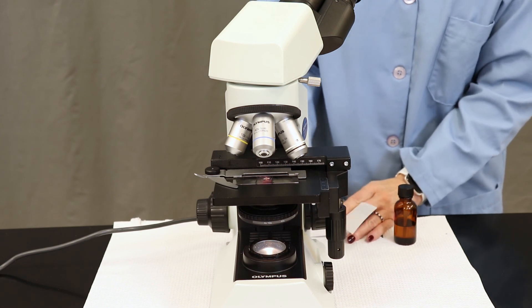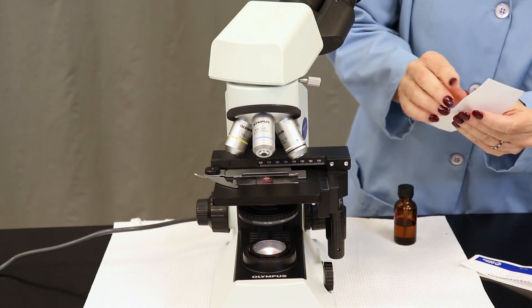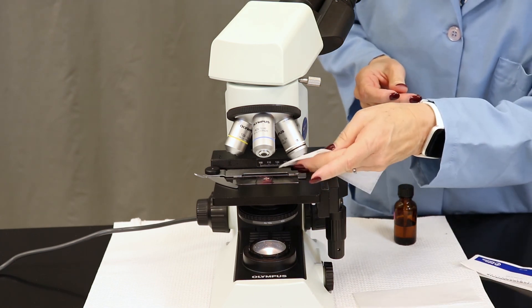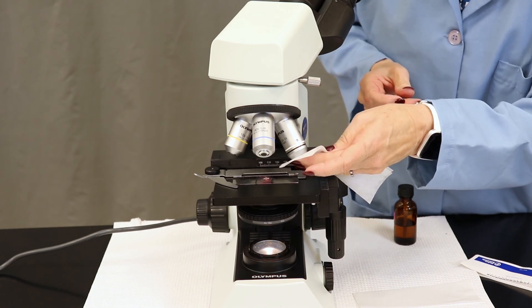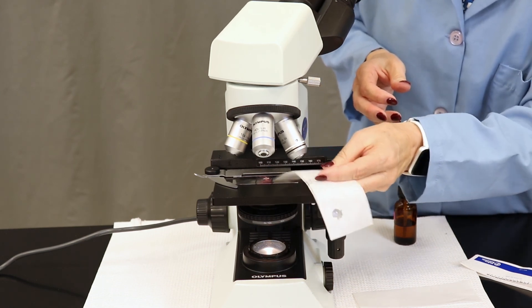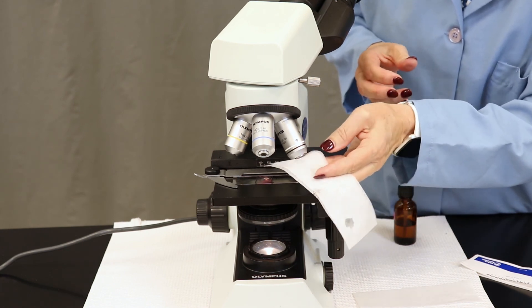You're going to use a fresh piece of lens paper from your kit, and you're going to use the fresh piece in order to wipe off the oil from the 100x objective. Gently blot until no more excess oil comes off on the lens paper.